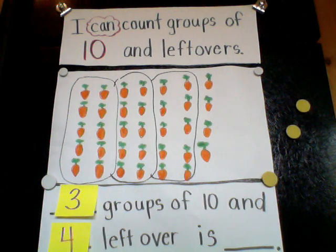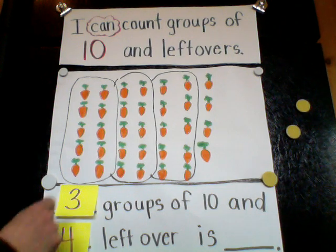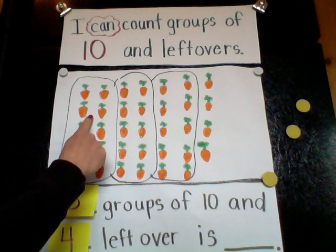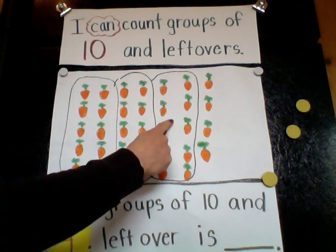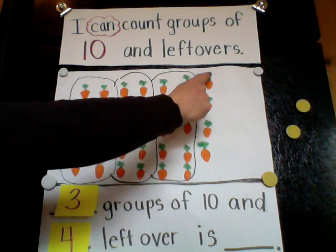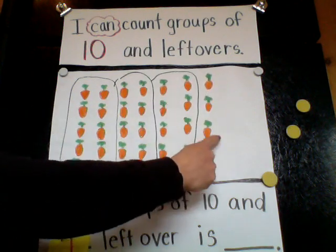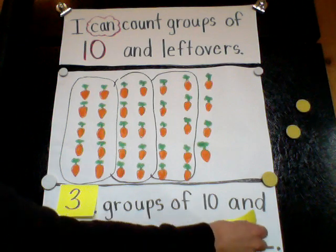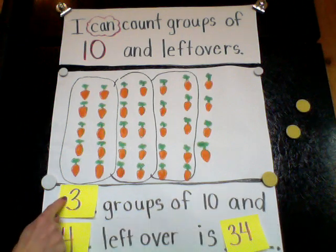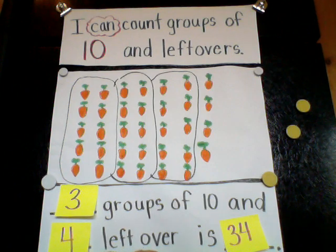So if I want to count and see how many carrots, I can count by ten through my groups of ten: ten, twenty, thirty. And then I stop and count on: thirty-one, thirty-two, thirty-three, thirty-four. So we found out that three groups of ten and four left over is thirty-four.